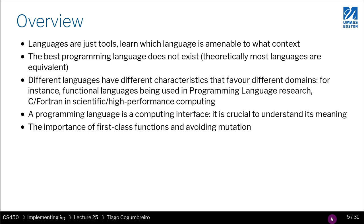We'll talk about why programming languages are good for different things. A programming language is essentially a computing interface - a user interface to control the computer. A program is just a recipe, an abstraction of a certain behavior of your computer. We're also going to talk about the importance of having functions as first-class values that can be passed around and used like any other value, like a number.